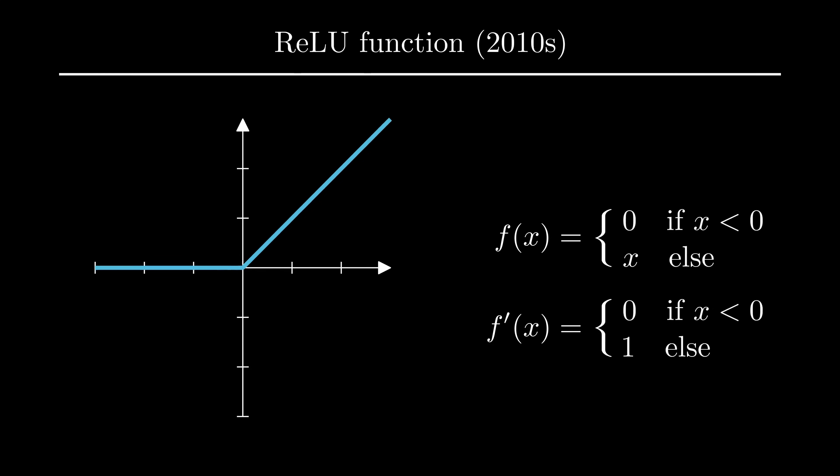But remember the theorem from the introduction. The only thing that keeps our model from breaking the Universal Approximation Theorem is this kink here, which makes it non-linear.